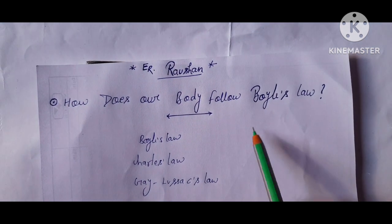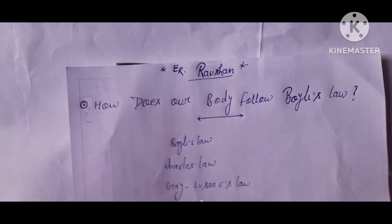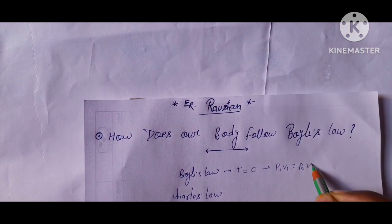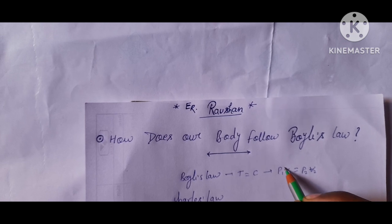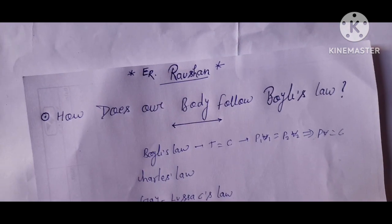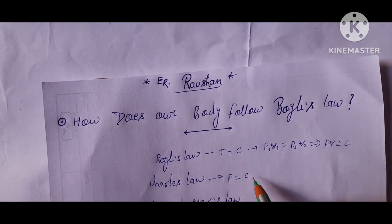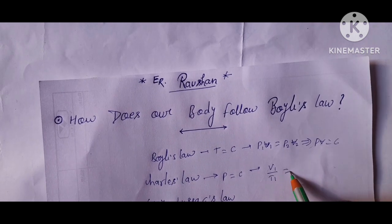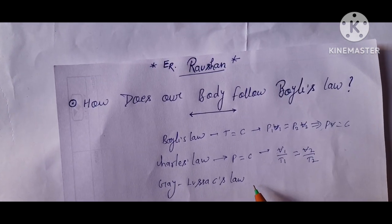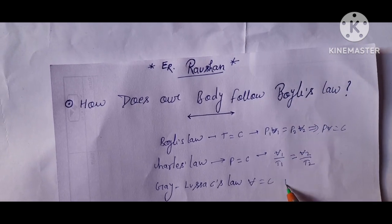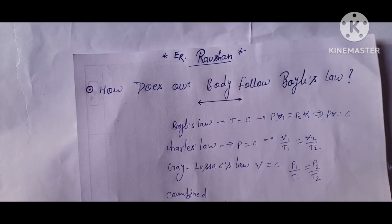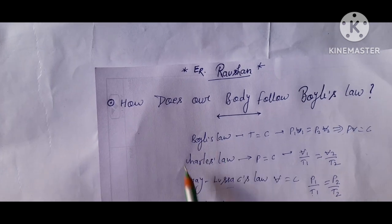First, a brief overview of the gas laws. For Boyle's Law, if temperature T is constant, then P1V1 = P2V2, where P is pressure and V is volume, and also PV = constant. For Charles's Law, if pressure is constant, then V1/T1 = V2/T2. For Gay-Lussac's Law, if volume is constant, then P1/T1 = P2/T2.